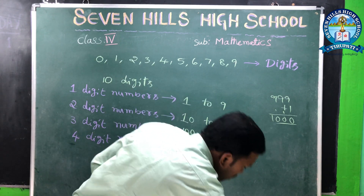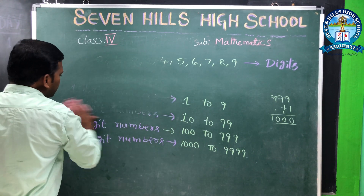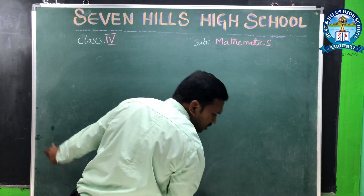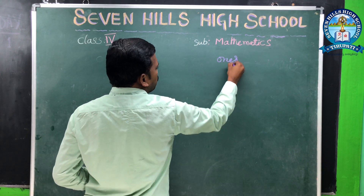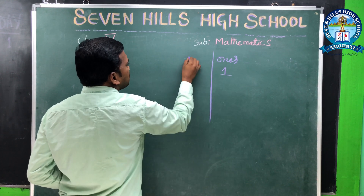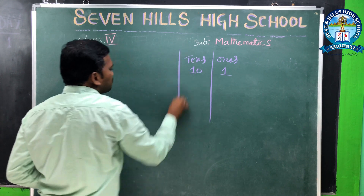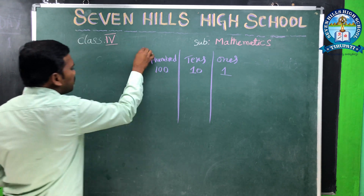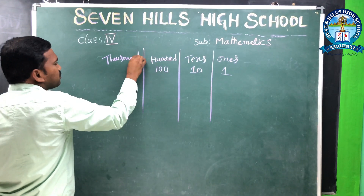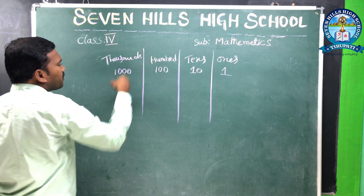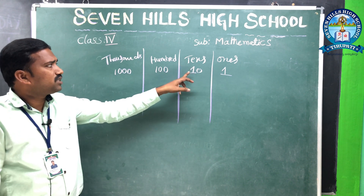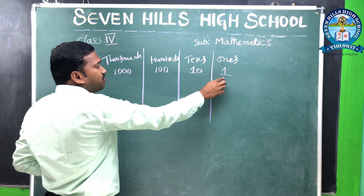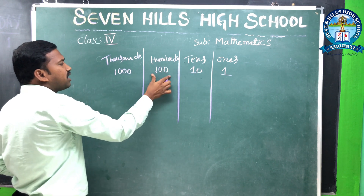How to read and write a number? We know the place value system. The ones place has value 1, the tens place has value 10, the hundreds place has value 100, and the thousands place has value 1000.